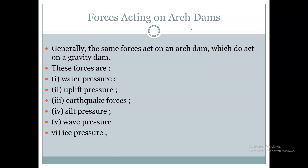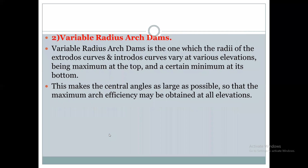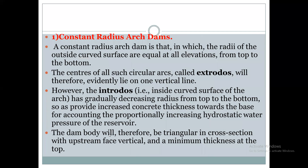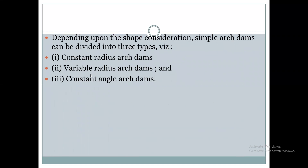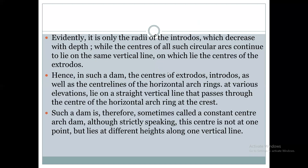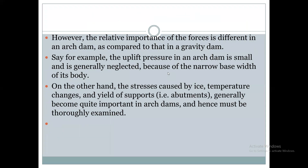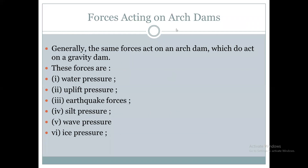In summary, we have seen the different types of arch dams: constant radius arch dam, variable radius arch dam, and constant angle arch dam. Lastly, the various forces acting on an arch dam are similar to those acting on a gravity dam — water pressure, uplift pressure, earthquake forces, silt pressure, wave pressure, and ice pressure.